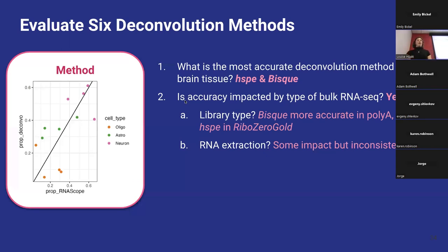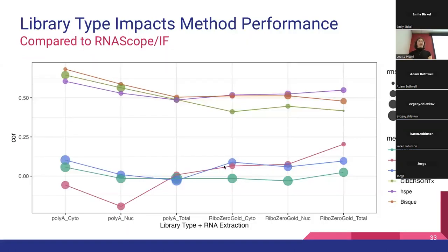So the conclusions from that evaluation: our most accurate methods are HSPE and BISC. Accuracy is impacted by the type of bulk RNA-seq — BISC is more accurate for poly-A, HSPE for ribo-zero gold, but the difference is marginal. RNA extraction had some impact — there's a little wobble within the three types — but it was less of a consistent pattern and didn't impact things as much as library type.